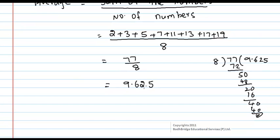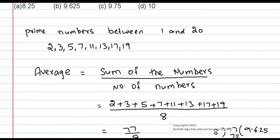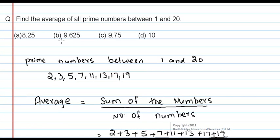So the average of prime numbers between 1 and 20 is 9.625. From options we have option B, 9.625.